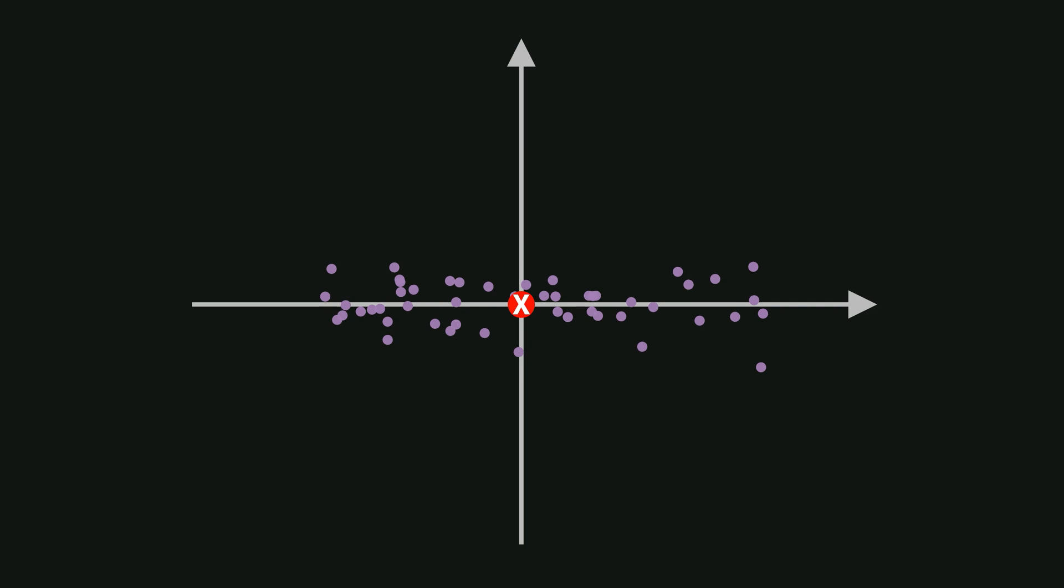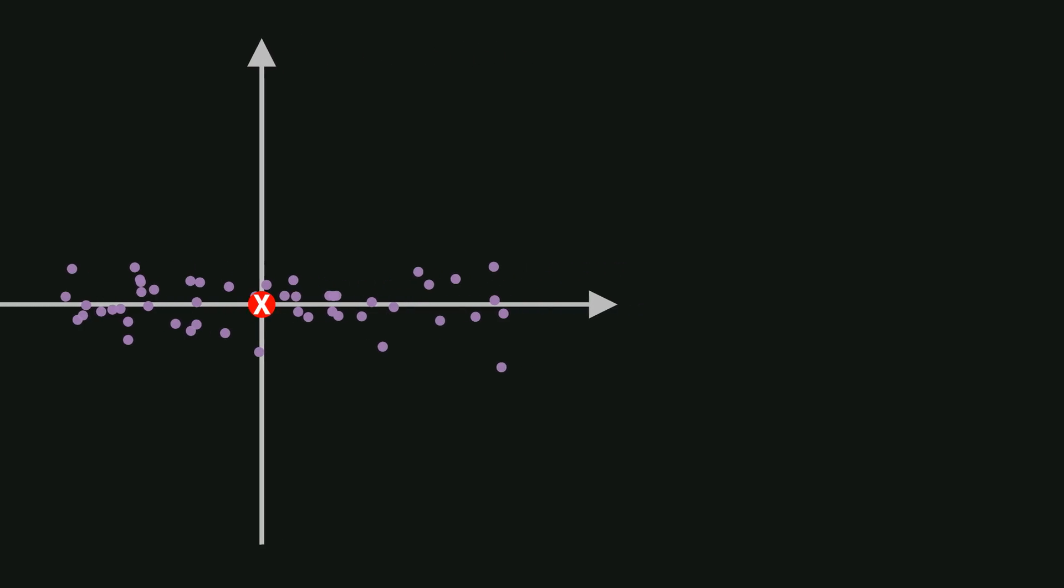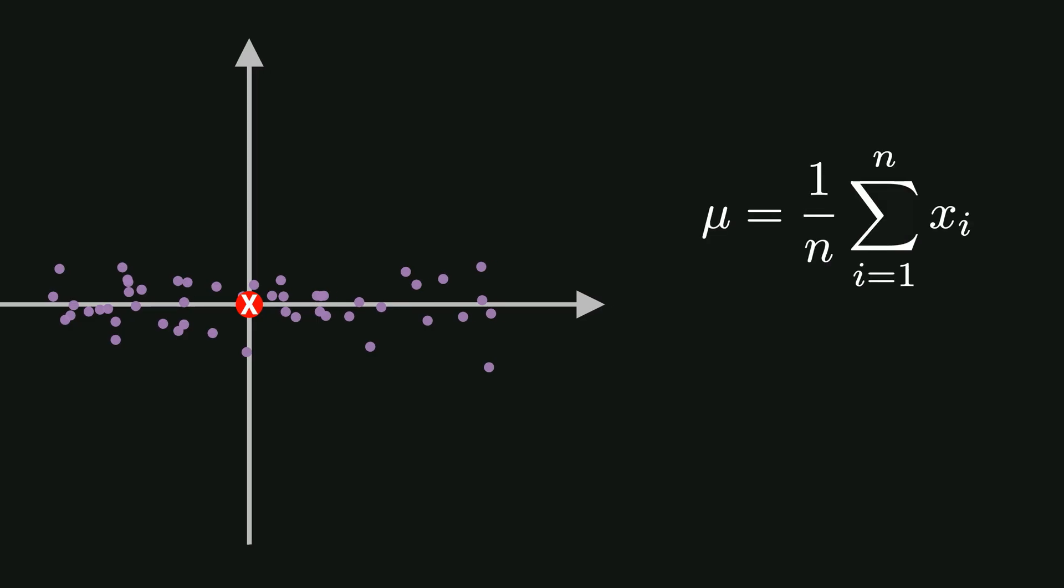At the same time, every data point keeps its relative position with respect to the others. The formula for standardization is simple. First, we calculate the mean of the feature. Then, for each data point, we subtract the mean and assign the result as the new value for that data point.